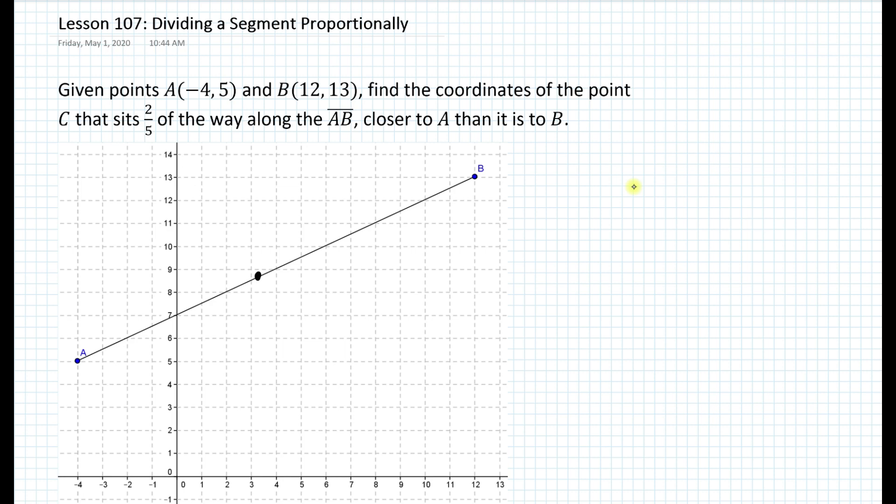That means that if the entire segment has a ratio of 5x, then it sits 2 fifths closer to A than to B. So this will be 2x. Obviously this makes sense because if you divide 2x by 5x, you just end up with 2 fifths.